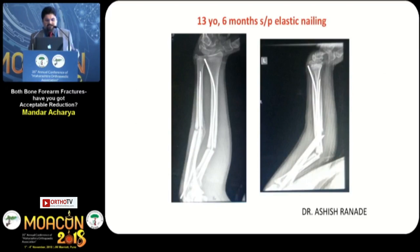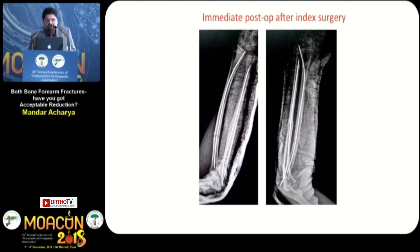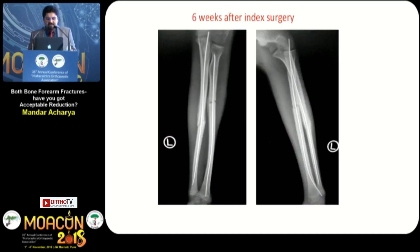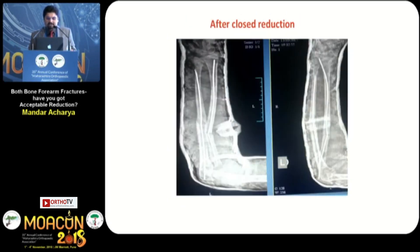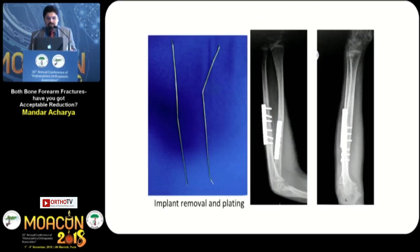Presenting a case given to me by Dr. Ashish Ranadeh: the initial fracture was treated by closed elastic nailing. The x-ray after six weeks shows it healed well. The patient then returned with a refracture after a fall. A closed reduction was performed with the nails in situ.